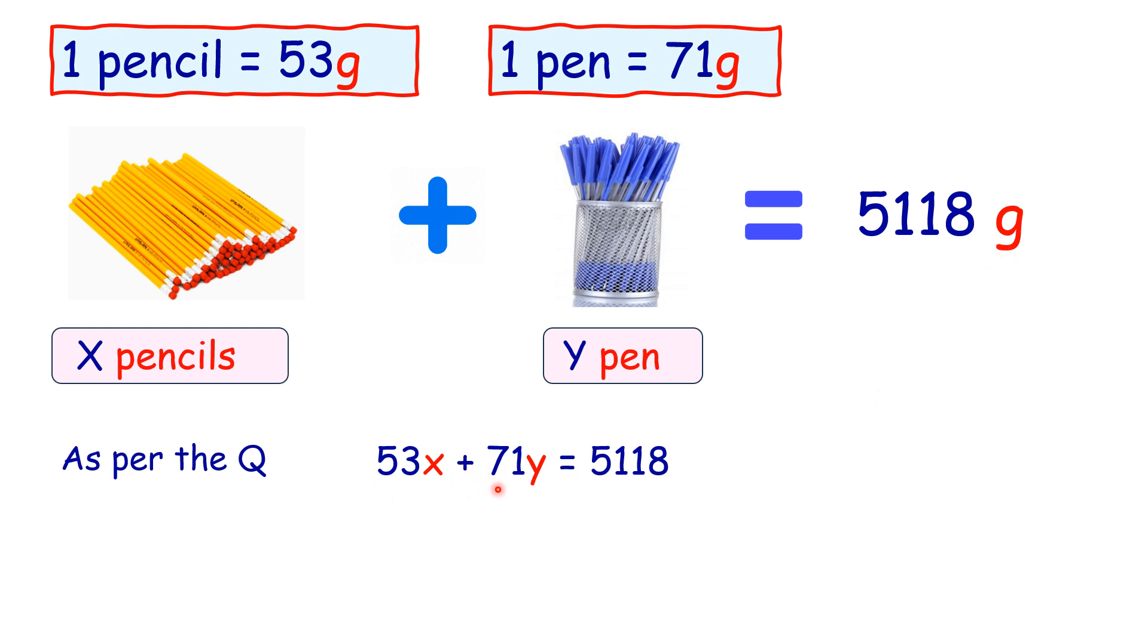Now, here it's a linear equation in two variables but we have got only one equation to solve it. So, can we find a unique solution for this?